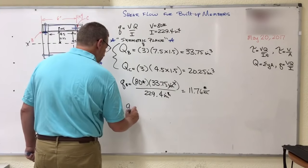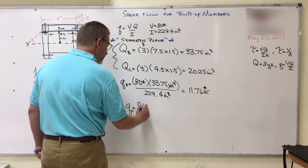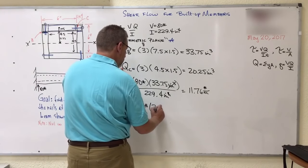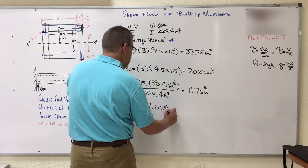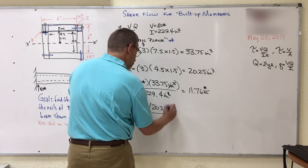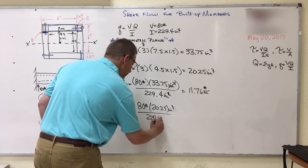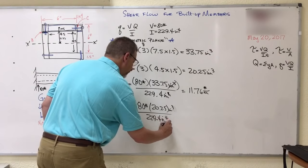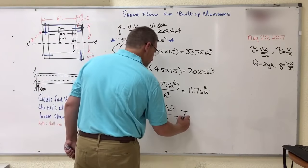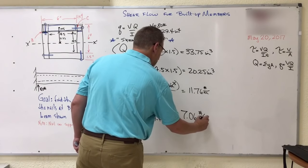And then QC, same concept, same V, but this time I have this Q, right? So that's 20.25 inches to the cube, divided by I, which is 229.4 inches to the fourth, and that is 7.06 pounds per inch.